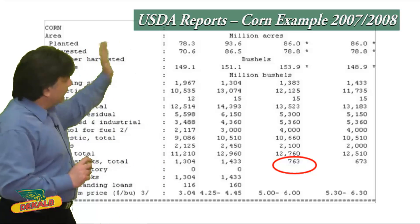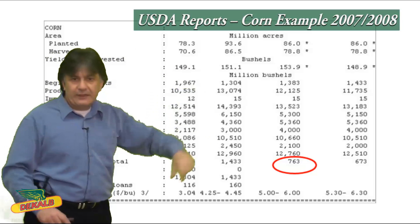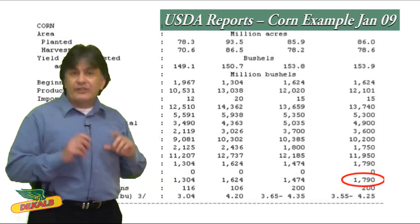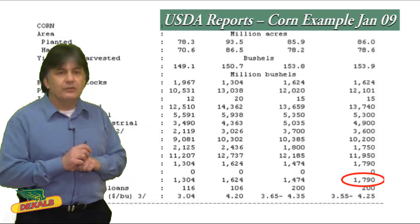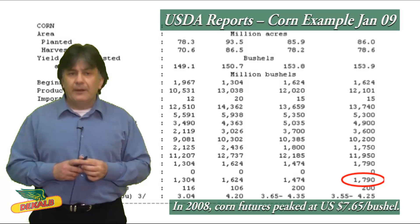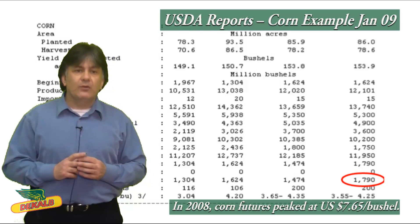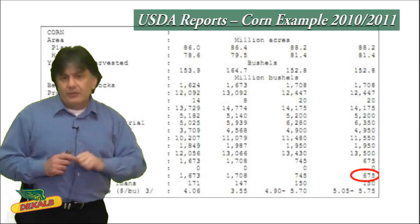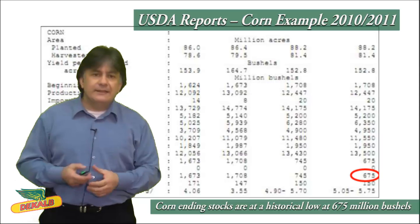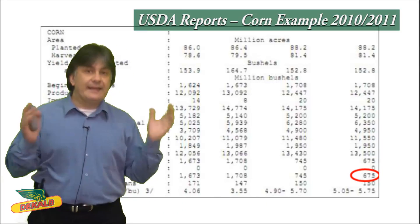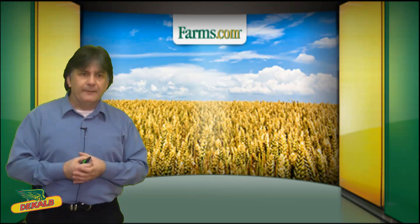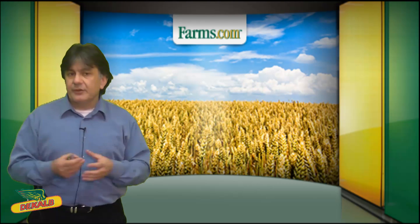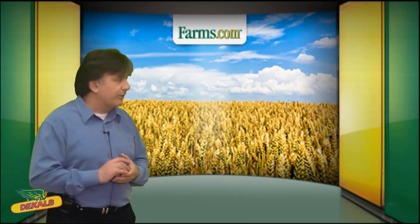Moving forward to 2007-08, corn ending stocks hit a low in June 2008 at 673 million bushels, a stocks-to-use ratio of 5.4%. By January 2009, that same ratio jumped to 1.790 billion bushels. Futures in June 2008 peaked at $7.65 a bushel, then dropped by $4.65 back to $3.00 within six to seven months. In 2010-11, corn ending stocks are down to 675 million bushels — speaking on February 22nd, July corn futures hit an overnight high of $7.38¾ per bushel — a stocks-to-use ratio of 5.0%, just barely above the 1937 Great Depression low of 4.5%.